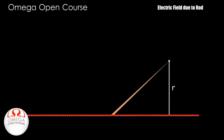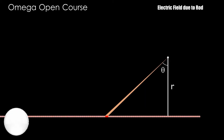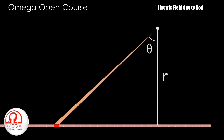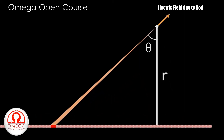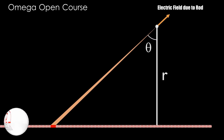Let us take an infinitesimally small part of the rod which lies at an angle theta from the perpendicular line and which subtends an infinitesimally small angle d-theta at the point. To find the electric field at the point, we need to find the electric field due to this infinitesimally small part and then integrate it over the entire length of the rod.